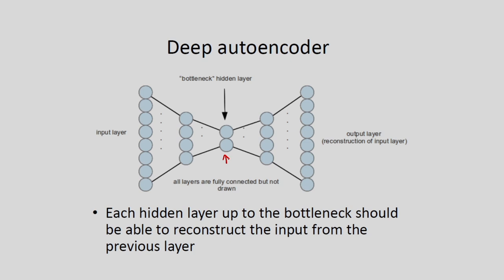First we do the encoding: the bottleneck layer learns the internal representation of the input data — that is the encoding — giving us the compressed or efficient representation. After this, during the decoding, the reconstruction of the original data or original image is done. Each hidden layer up to the bottleneck layer should be able to reconstruct the input from the previous layer. This is the structure of the deep autoencoder — a combination of encoder and decoder: encoder for efficient representation, decoder for reconstruction.